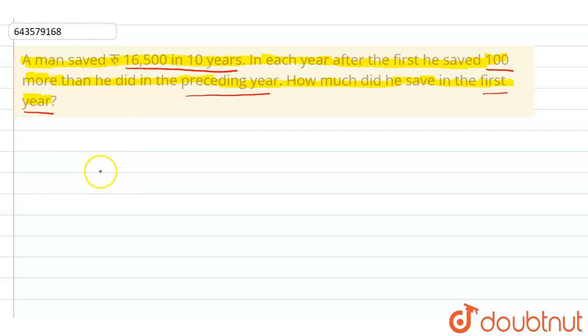First, let's assume he saved ₹x in the first year. We can see that this forms an arithmetic progression (AP) where the common difference d equals ₹100.